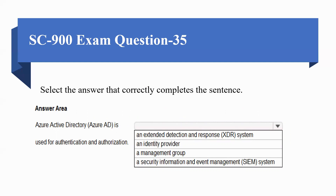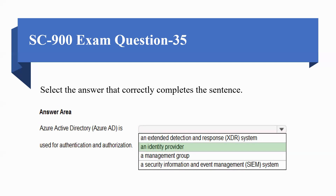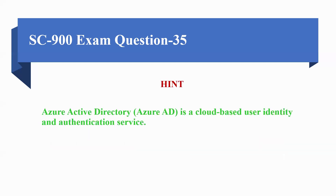Question 35: select the answer that correctly completes the sentence. Azure Active Directory (AD) is used for authentication and authorization. Options are: A) an extended detection and response system, B) an identity provider, C) a management group, D) a security information and event management system. The correct option is B, an identity provider, because Azure Active Directory is a cloud-based user identity and authorization service.